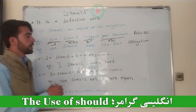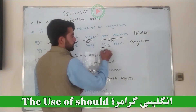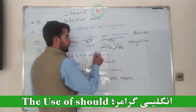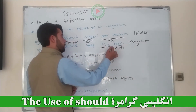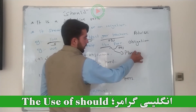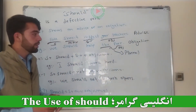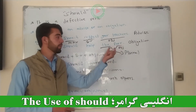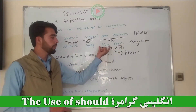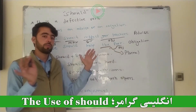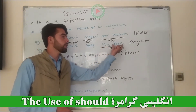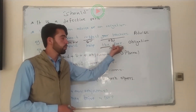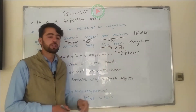In the phrase 'the poor,' 'the' is the definite article and 'poor' is an adjective. When 'the' is placed before an adjective, it makes it plural, meaning 'poor people' — all poor or needy people. Similarly, 'the rich' means rich people.